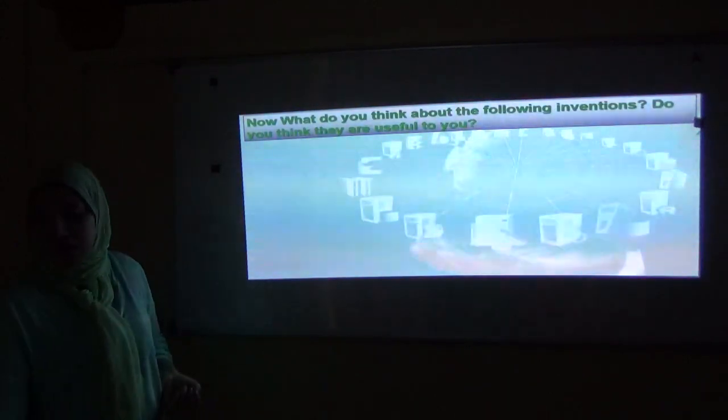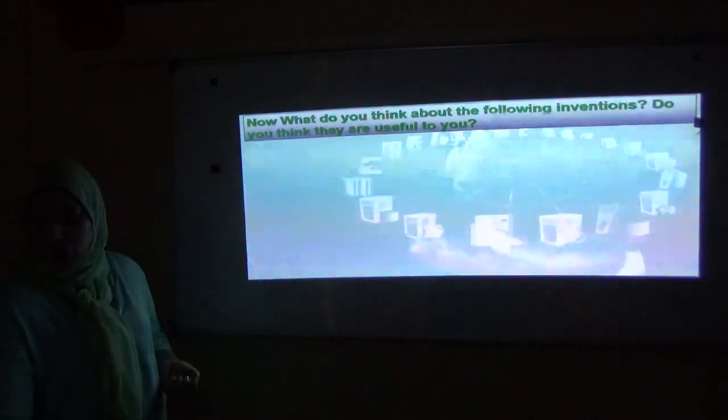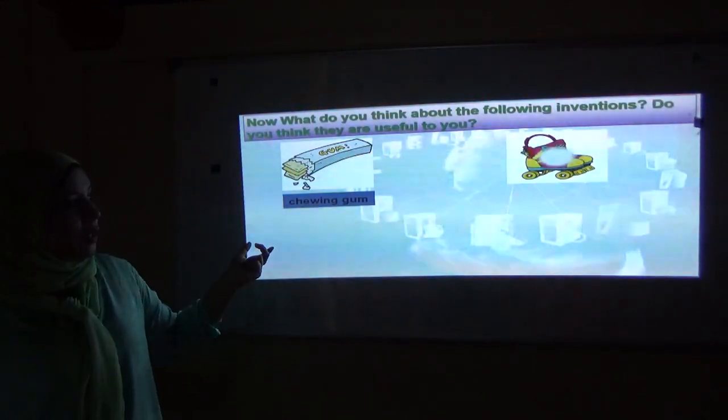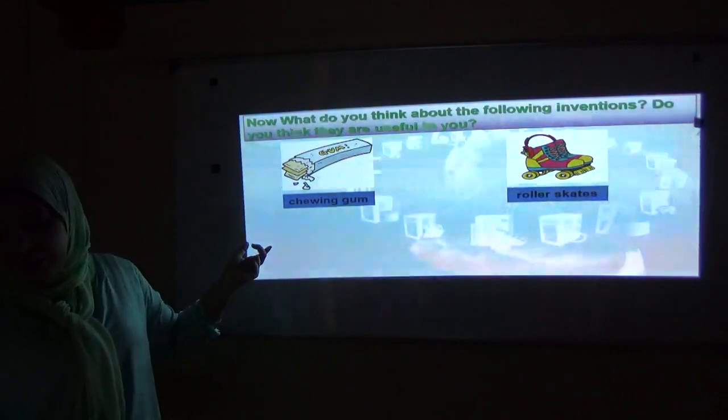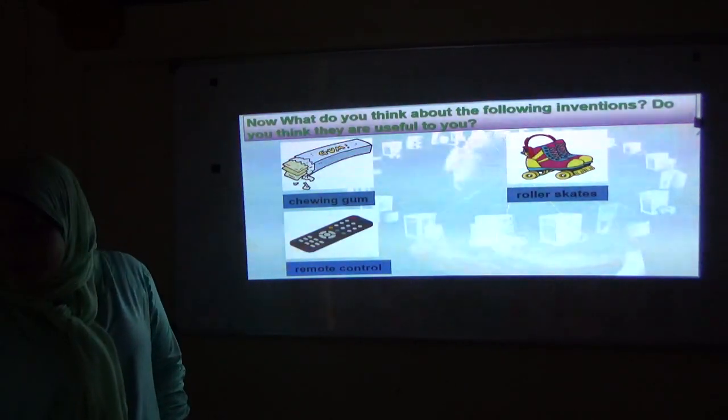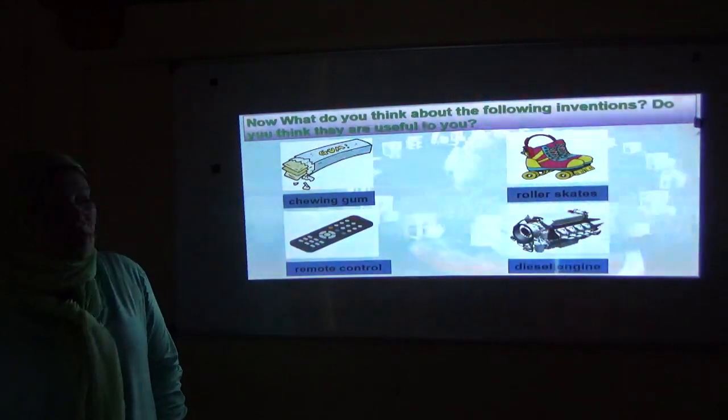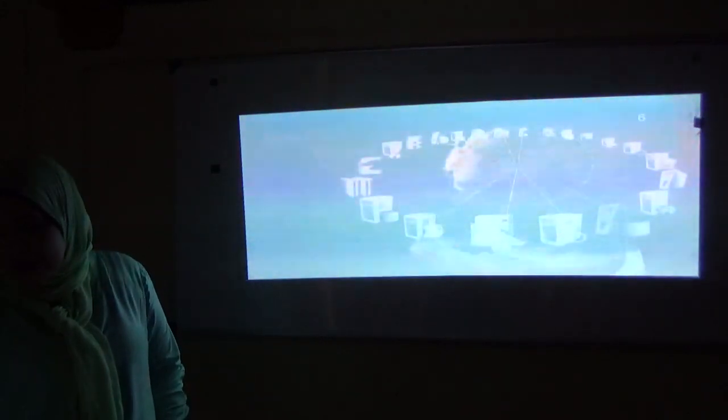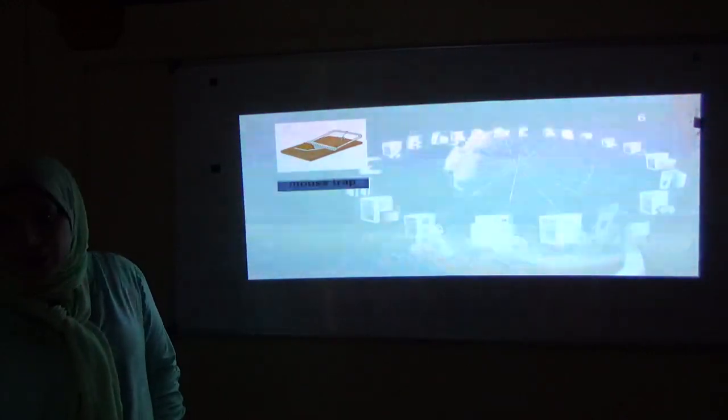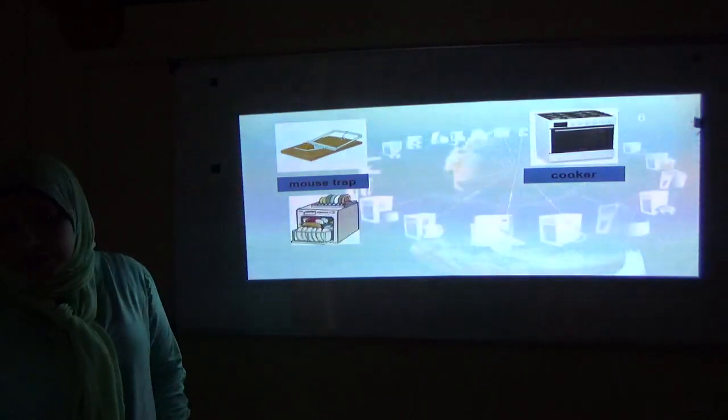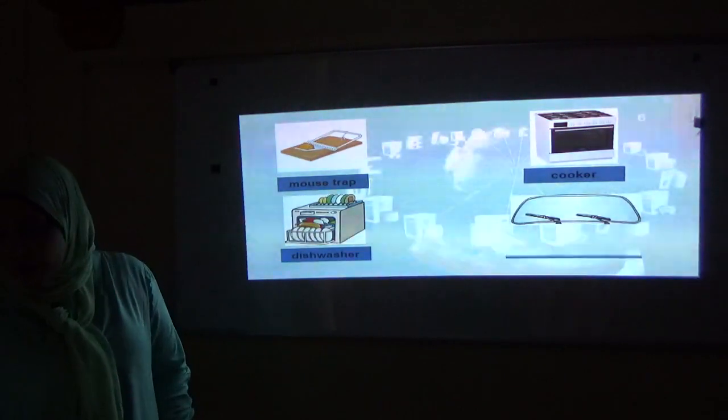Now think about the following inventions. Do you think they are useful to you? Think about each one of them. The first one is chewing gum. Number two, roller skates. Number three, remote control. Four, diesel engine. Number five, mousetrap. Number six, cooker. Number seven, dishwasher. And the last one is windscreen wipers.